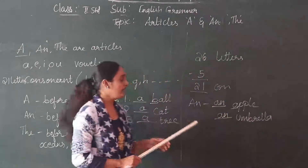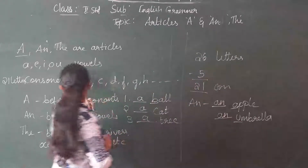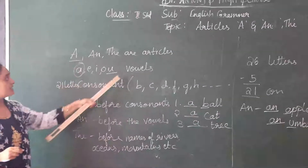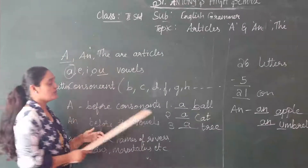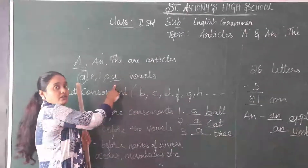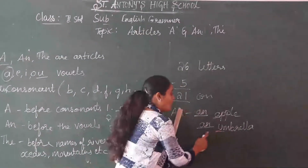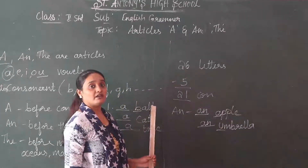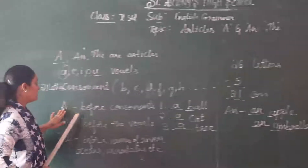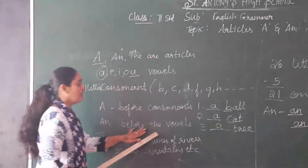Next example — AN umbrella. So what is U? U is also a vowel. In the first example we wrote AN apple — A is a vowel. Next, U is also a vowel. So before the vowels we are writing AN. Before the vowels we are writing AN. Understood, children?